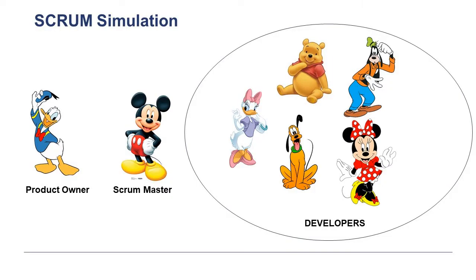and developers. As we all know, the product owner is someone who represents the voice of the customer and someone who is responsible for ordering the product backlog. The Scrum master is a servant leader who facilitates the conversation within the team, someone who is a coach to the team and someone who's there to remove the impediments which come in the way. The developers are people who are going to work on building and validating the product.